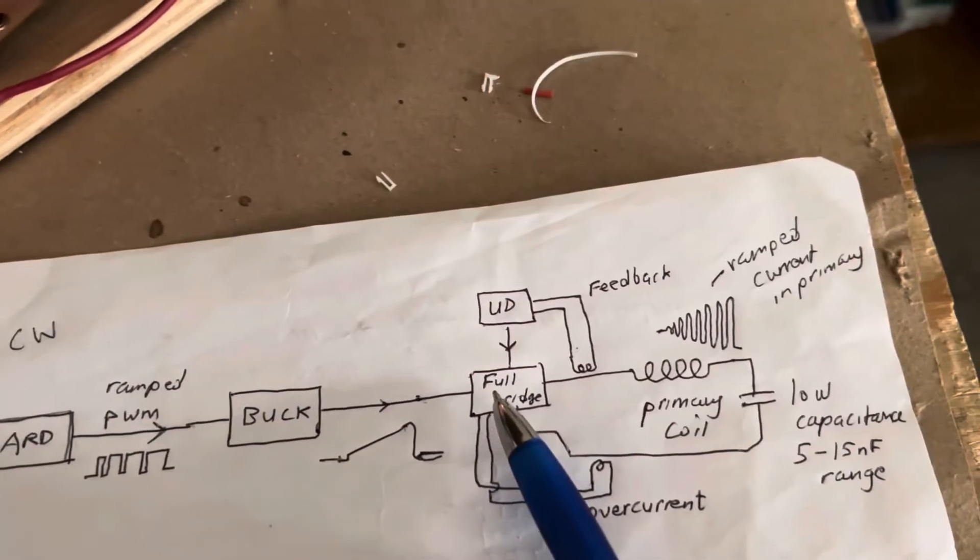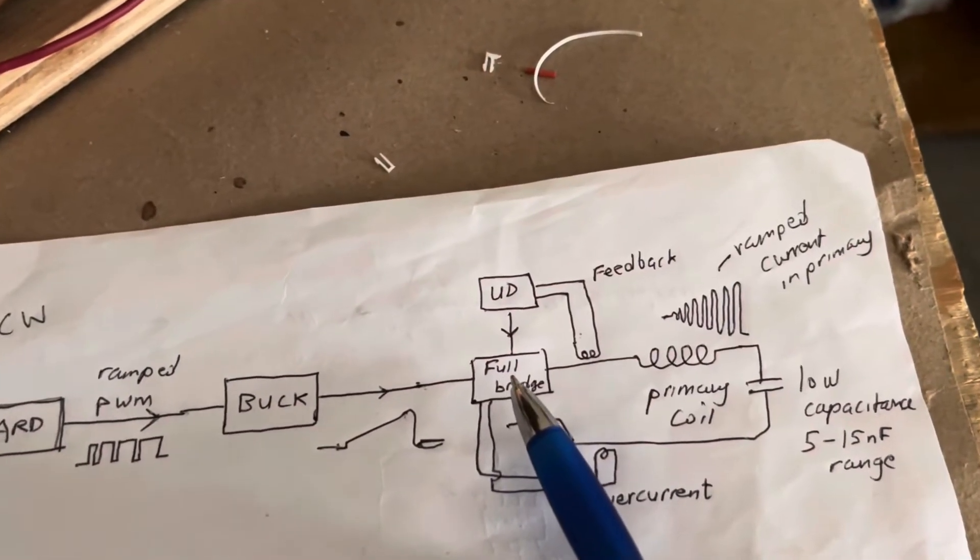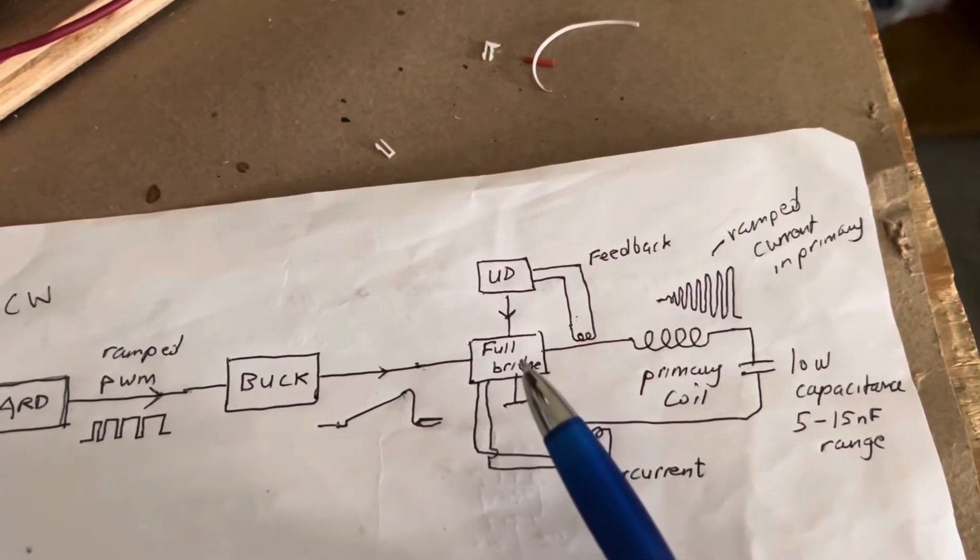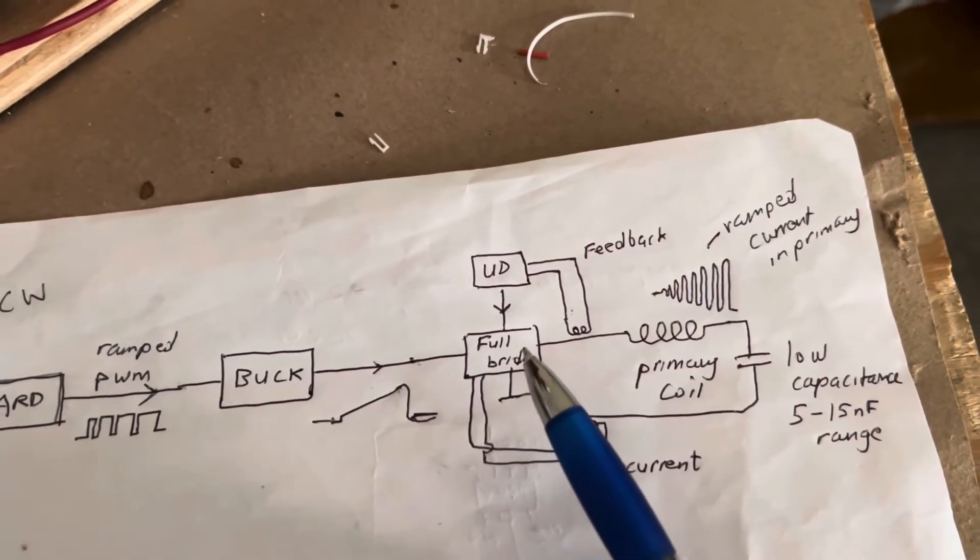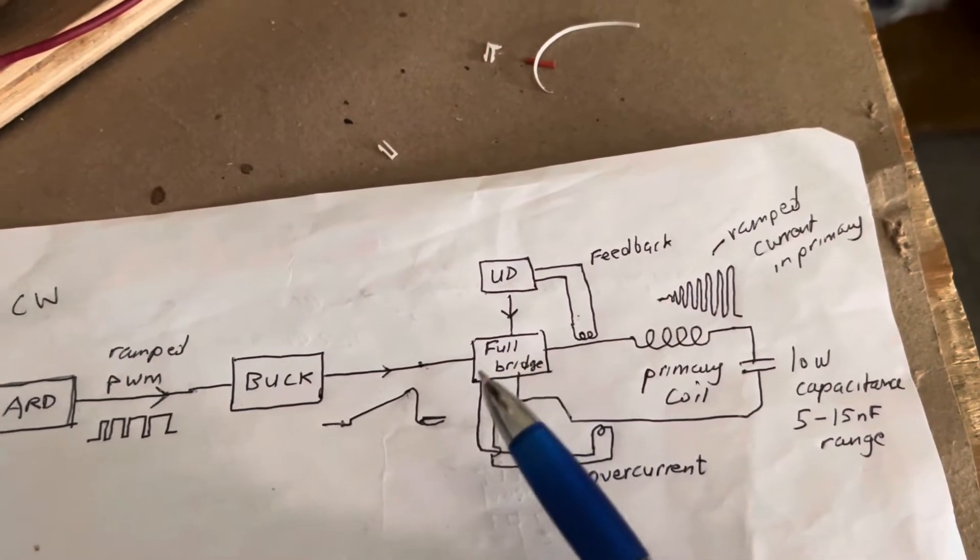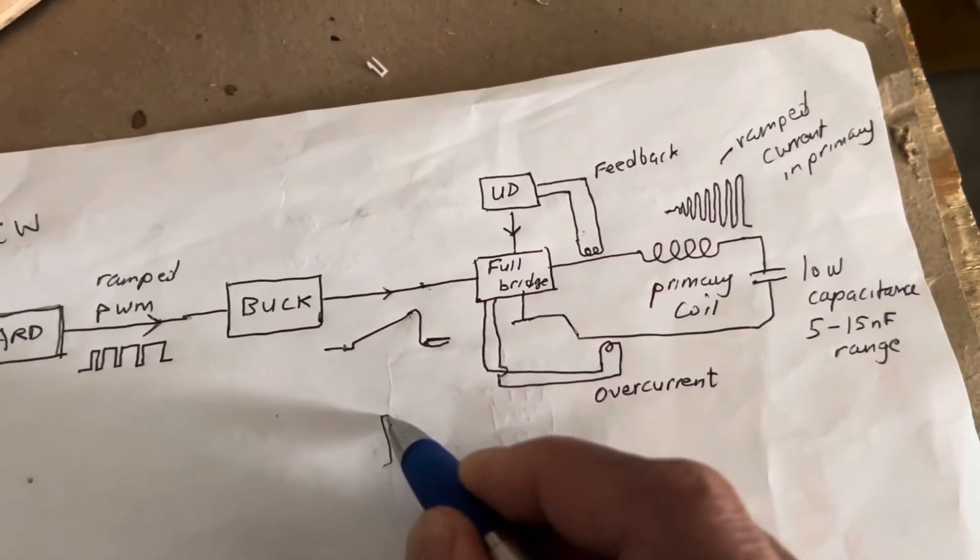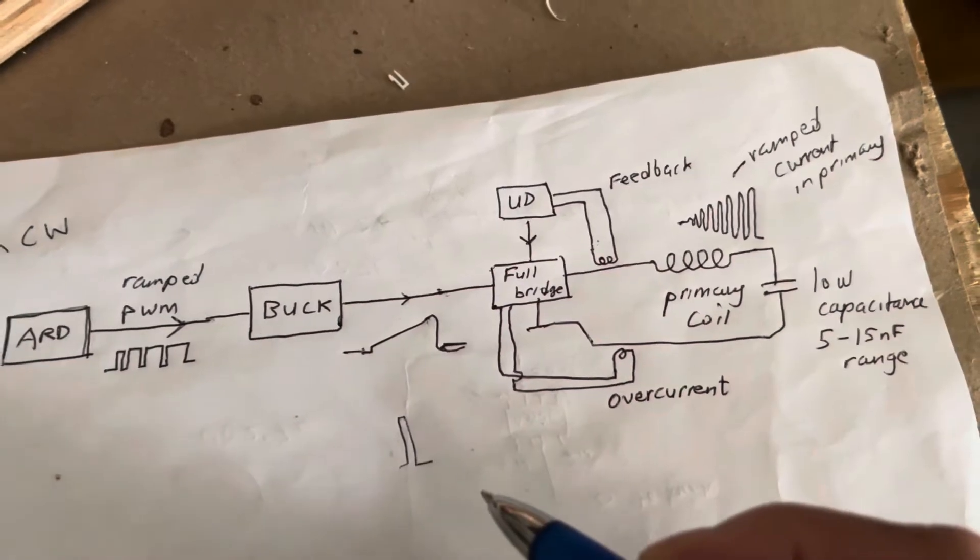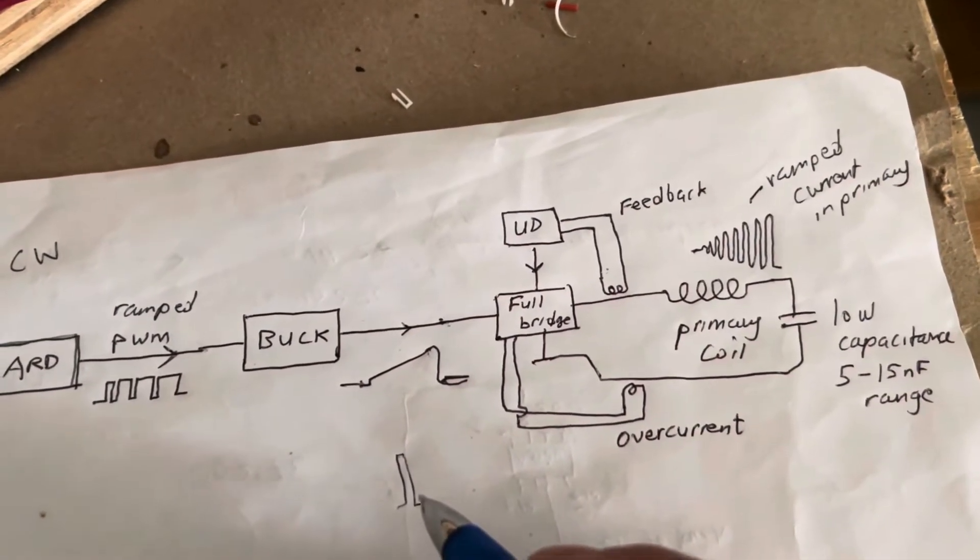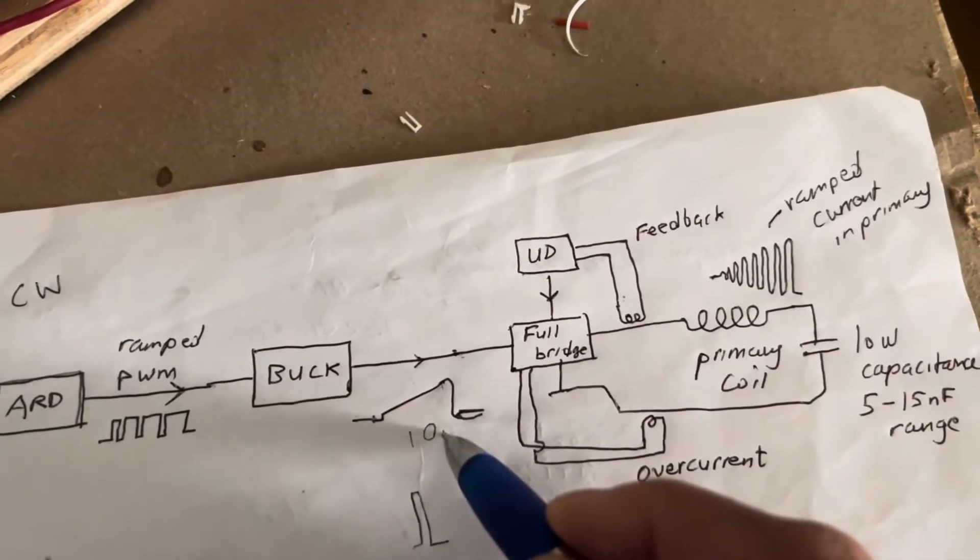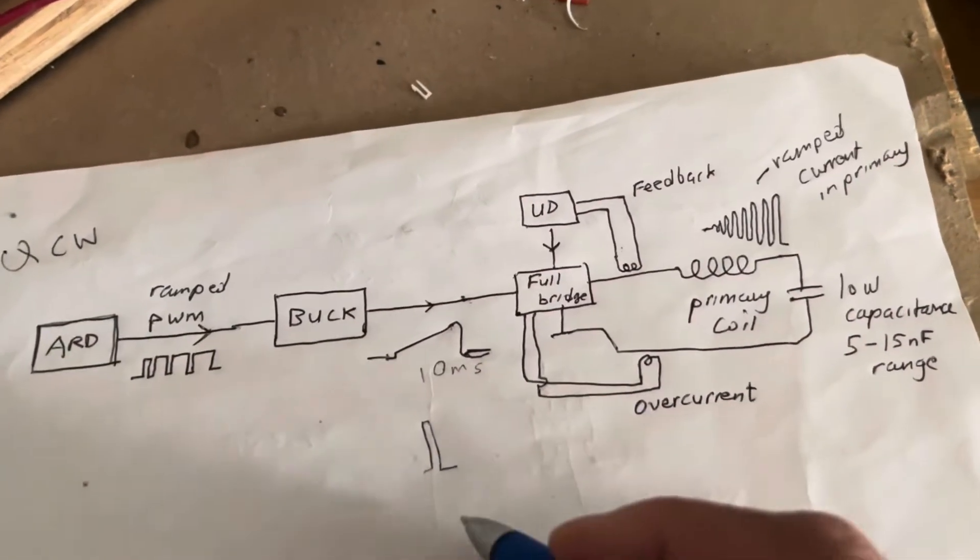Now the regular double resonant Tesla coil, and I won't go into how these work because there's plenty of information out there, uses a signal which is usually just a straight square wave, a very short duration, something like that, very short duration square wave instead of a long ramp signal which is 10 milliseconds.